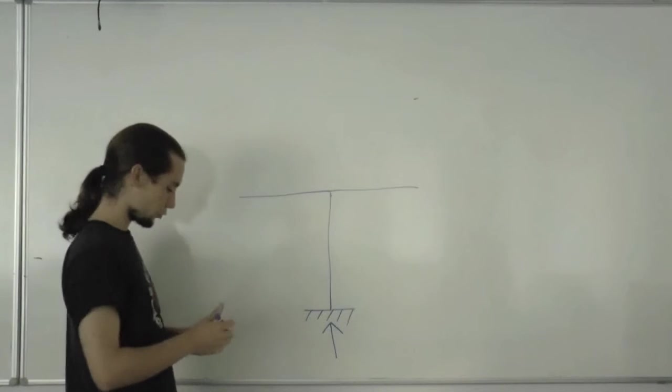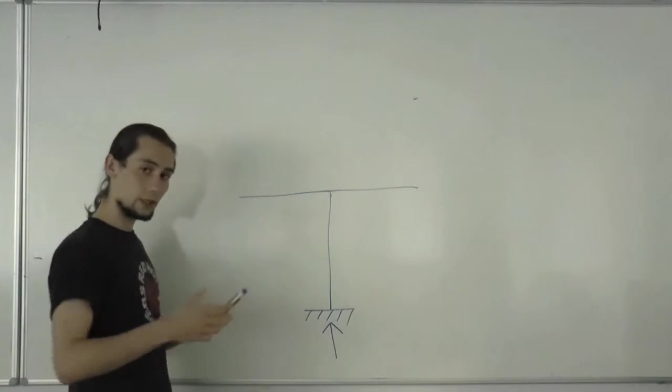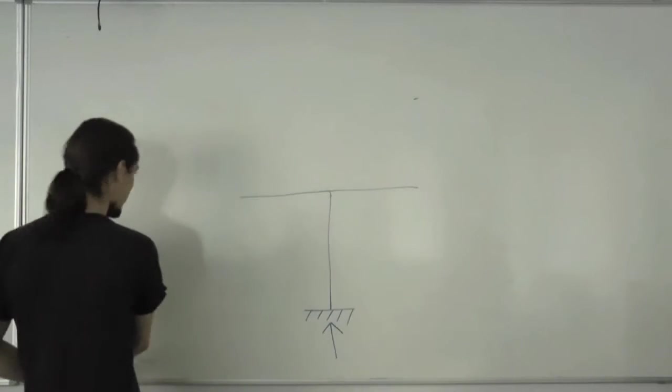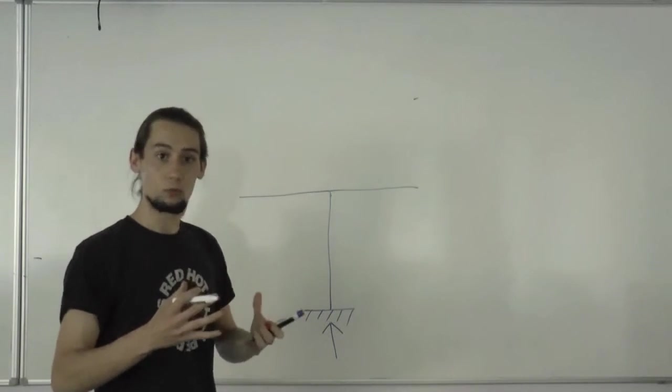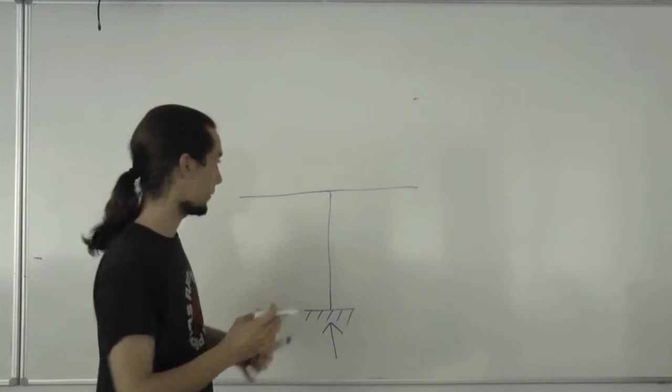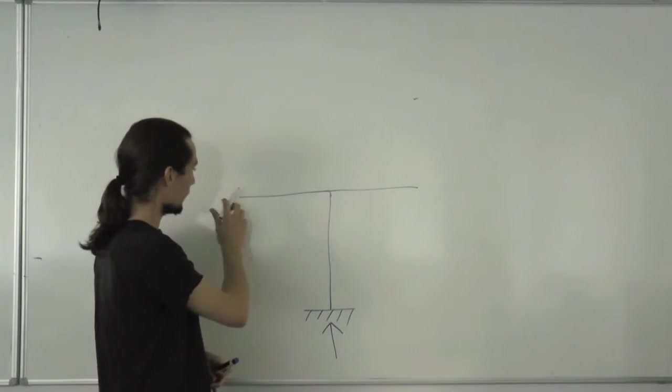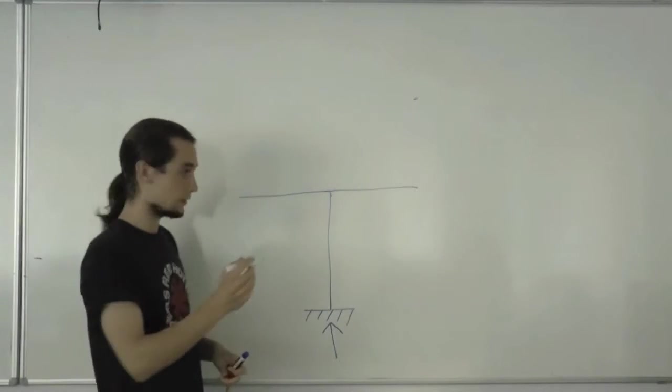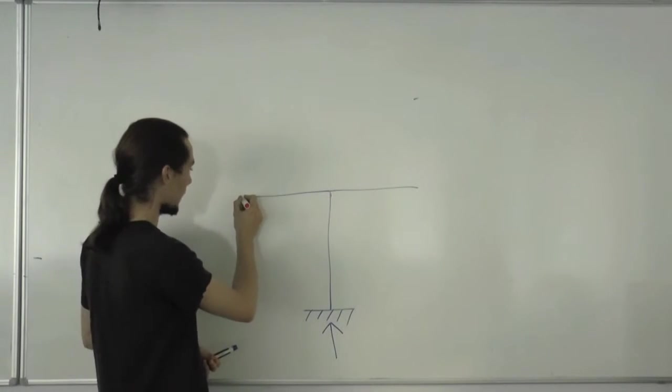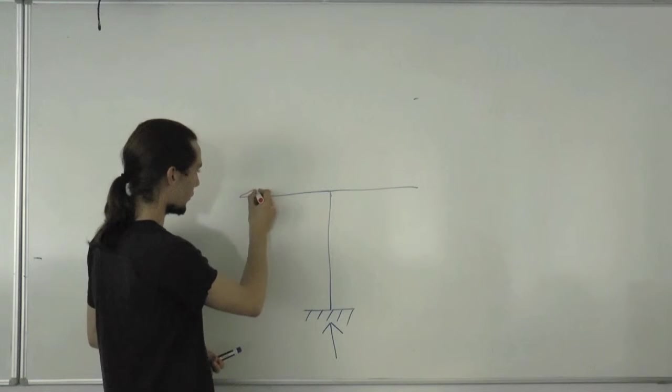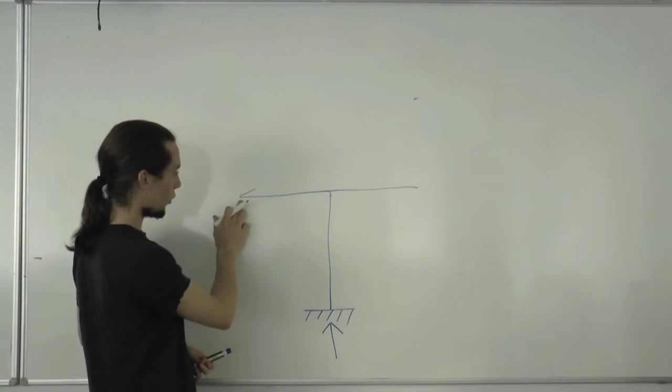When we start drawing the shear force diagram, it's going to be a relatively similar situation. Because the shear is basically the internal reaction that resists the loading, the shear force is going to increase in the beam from one end or the other as we move away, because the net load on the part of the beam we're interested in is increasing.